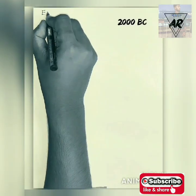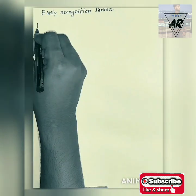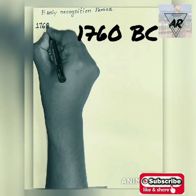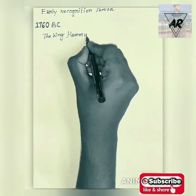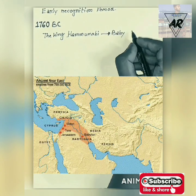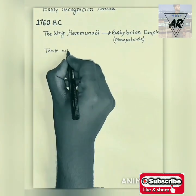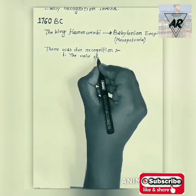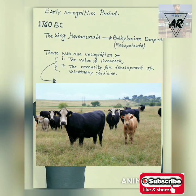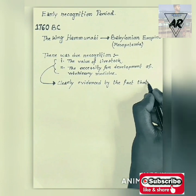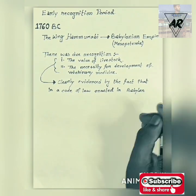Moving from the early records, we arrive at the early recognition period of veterinary medicine. Around 1760 BC, King Hammurabi established the Babylonian Empire in the central part of Mesopotamia. He was one of the most well-known kings of that period. There was due recognition of the value of livestock and the necessity for developing veterinary medicine, clearly evidenced by a code of laws enacted in Babylon — in simple words, a system of laws to protect animal rights.